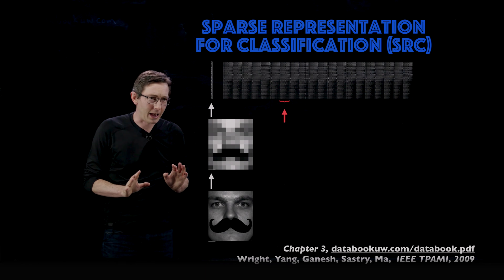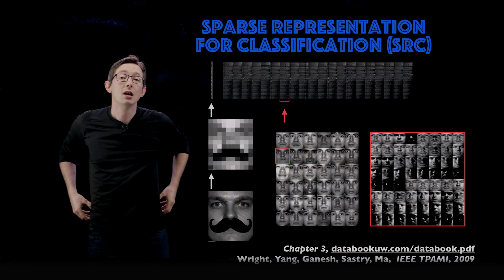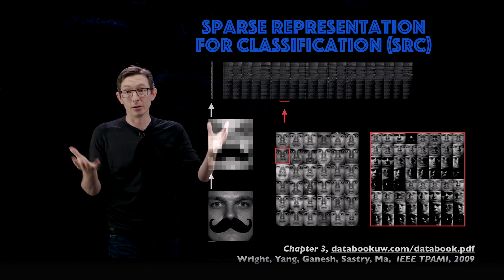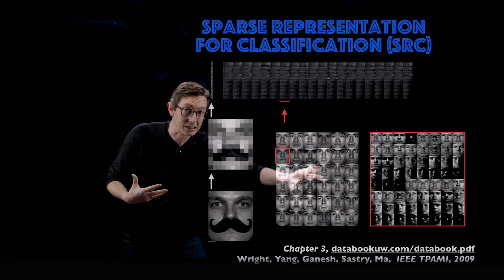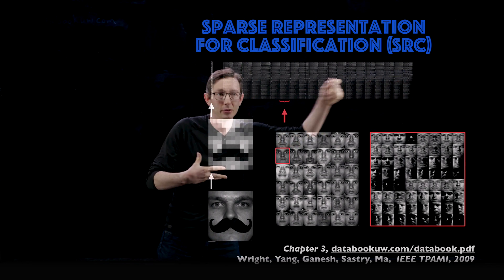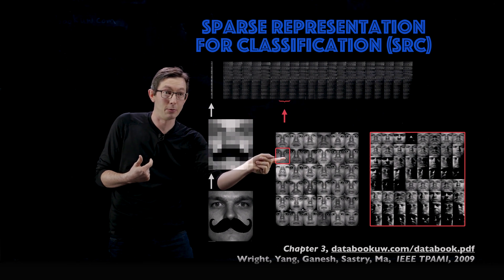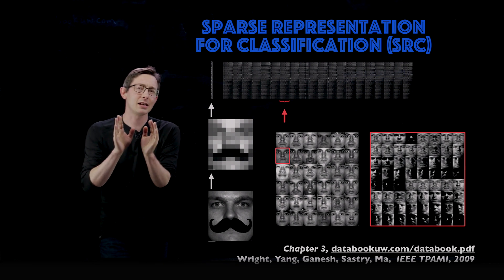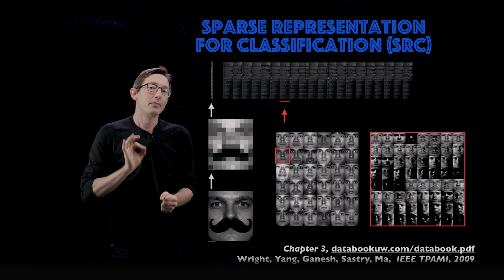You do this for every single image of every single person in a large database — imagine the Facebook database or an FBI database. This is the Yale B faces dataset, with 36 people and 64 images each from different lighting conditions. Each image is down-sampled and reshaped as a column vector, so the seventh person occupies 64 columns in this massive library matrix.